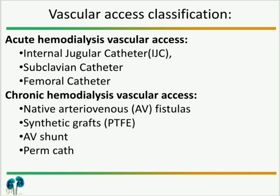Acute access is a temporary access used for emergency care. Chronic hemodialysis vascular access is for permanent use and may be established when the patient has an estimated GFR of 15 to 20 ml per minute, which means end-stage renal disease. For acute hemodialysis vascular access, we have internal jugular catheter, subclavian catheter, and femoral catheter.